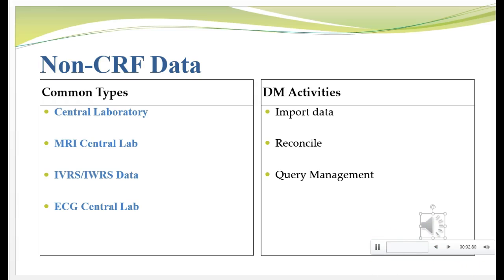What is non-case report form data? The most common types come from what we call central or core labs — core meaning they are the core source that all data goes into. What we receive from these labs in data management are data sets. We don't import those data sets back into the clinical database, but we have the clinical database data sets and these central lab data sets existing in the same computer system. We run programs to compare them, and this process is called reconciliation — looking to see that for every patient in the clinical database you have the associated laboratory data, and vice versa.